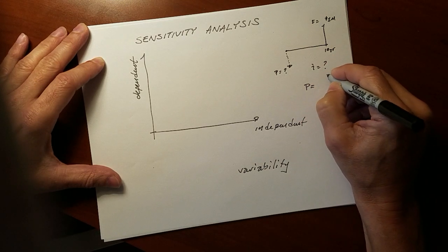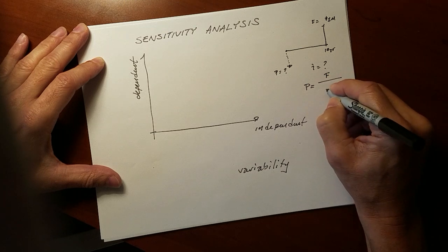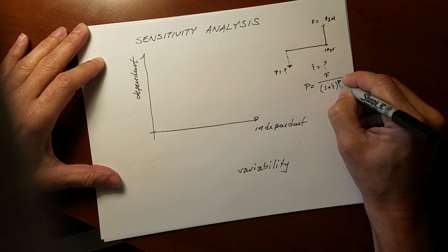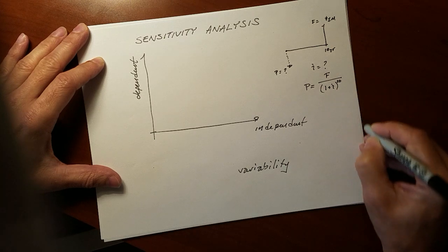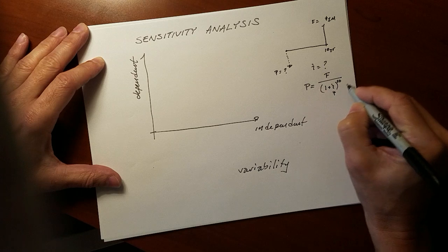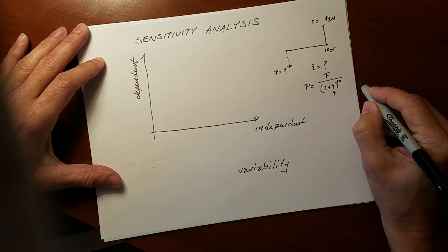We know that P, the present value of a future payment, equals F over the discount rate, which I've expressed as I, times the number, raised to the power of the number of years, in this case 10, controls the relationship between F and P.